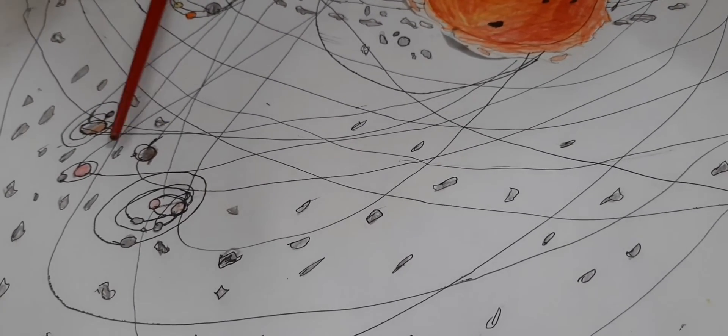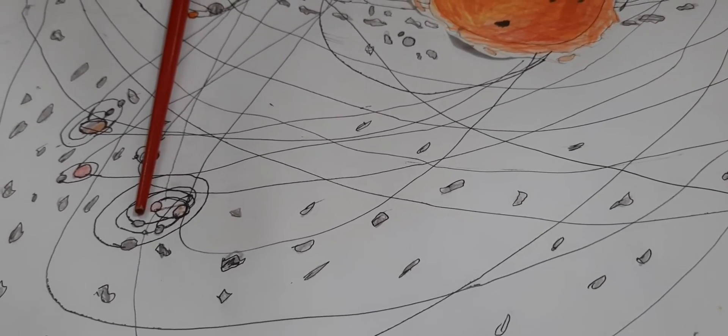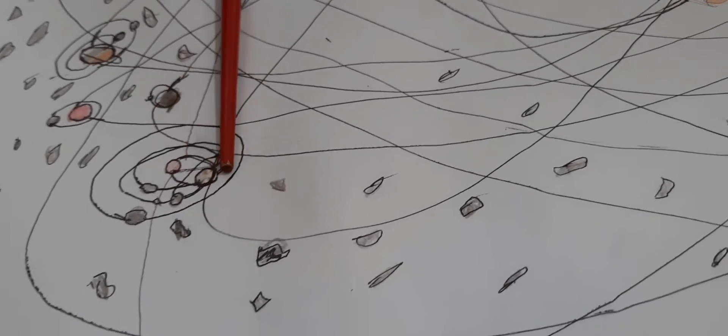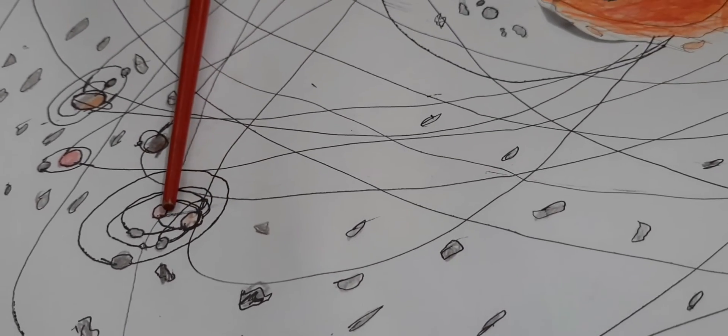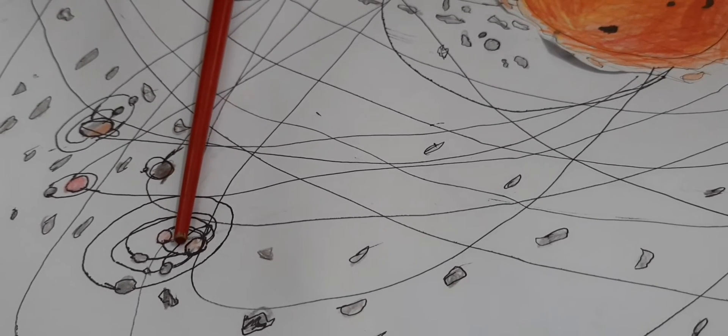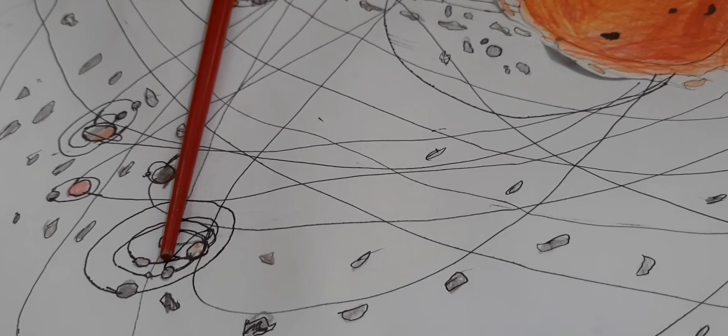The first one is Hydra. It is bulged. Charon, it's the biggest one. It's so big that Pluto also orbits it. Here's Kerberos, Styx, Nix, and this is the final one.